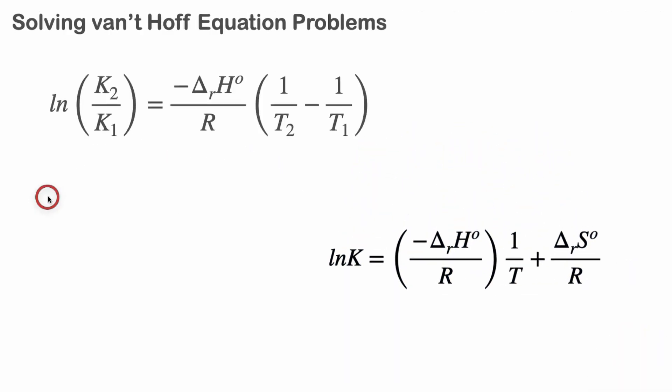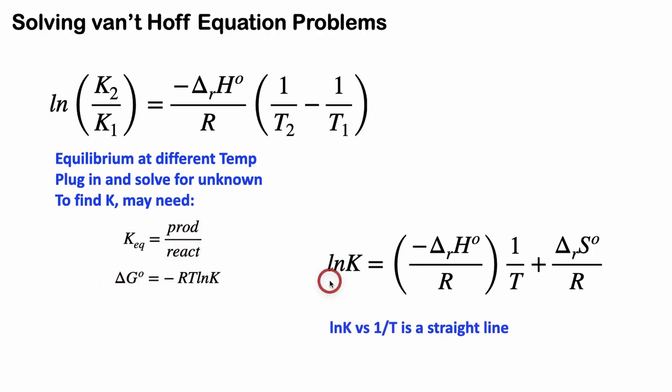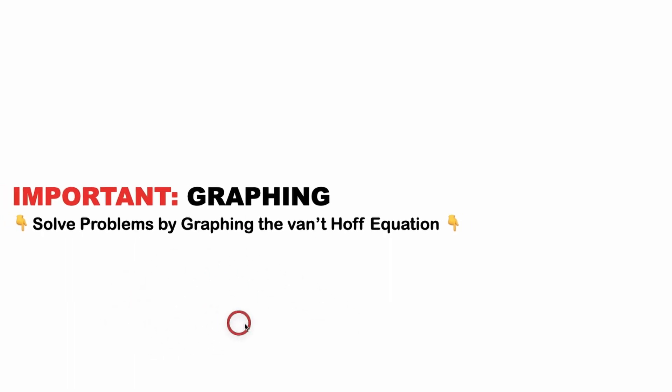Alrighty, y'all. So very important, if you have problems that establish equilibrium at different temperatures, you'll use the integrative form right here. And you basically plug in and solve for the unknown. But to find the equilibrium constant, you may need to calculate it like I did with the pressures or using this equation right here. And a graph of ln K versus 1/T is a straight line using the van't Hoff equation with slope of negative delta H over R. If you really want to know this topic solid, then you should know how to graph the van't Hoff equation. I have a short video right here that you should check out. And hang in there, y'all. I know thermo is not an easy subject, but the more problems you do, the better you'll get, and you can survive. Cheers.